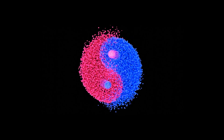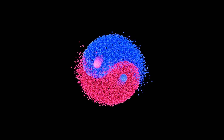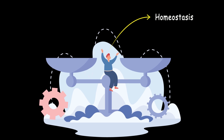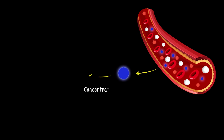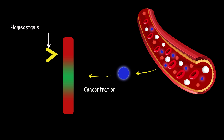Everything is about balance in our world, specifically in our bodies. The system that protects this balance is called homeostasis. For example, a substance in our blood should be in a specific concentration. If the concentration goes higher for any reason, our body tries to activate or deactivate mechanisms that decrease the concentration to the normal range.